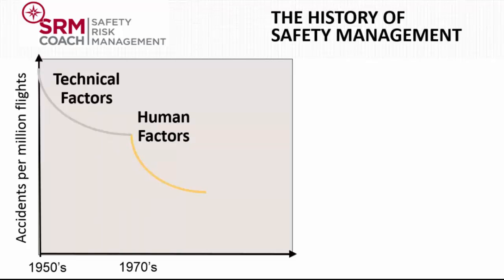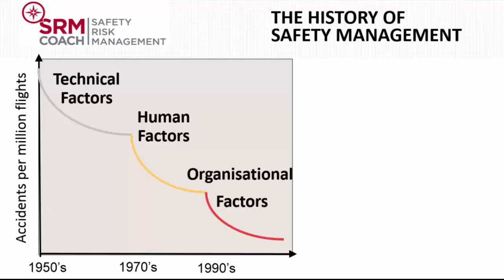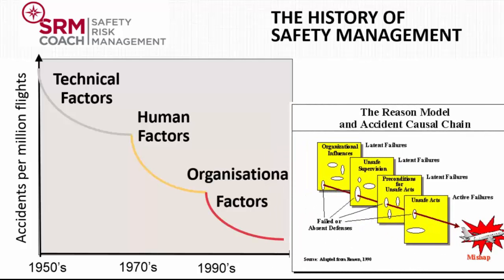For flight crew, crew resource management was invented and engineers started to be trained in human error management. This focus on human factors brought down the accident rate quite significantly. However, improvements started to slow down. In the 1990s, we started looking differently at accidents. Instead of looking at the individual as a cause of accidents, we started looking at the complex system in which the individual works. This is based on the organizational accident causation model by James Reason.